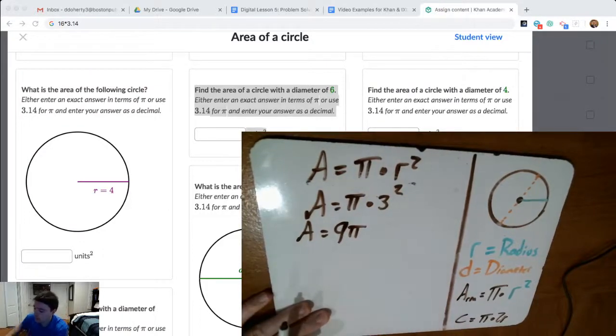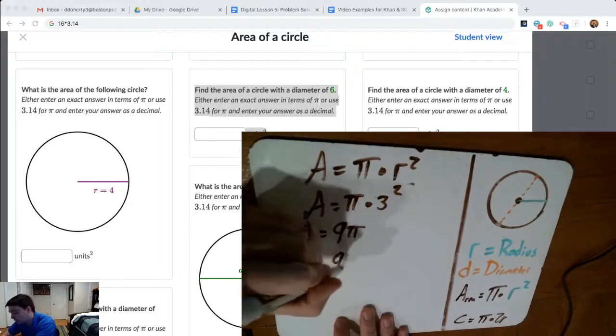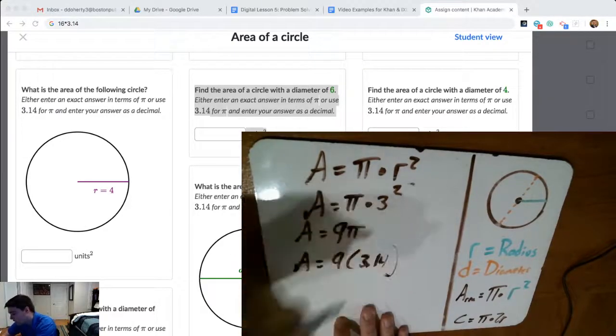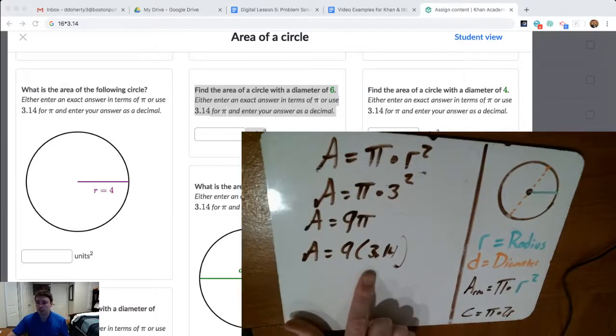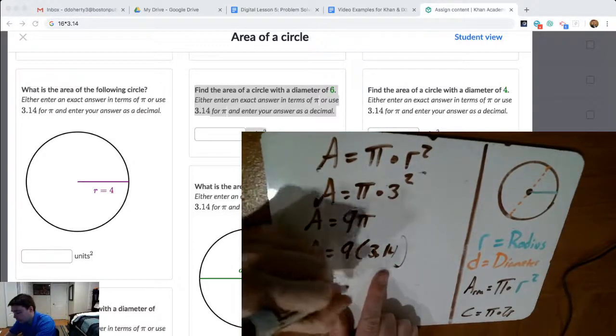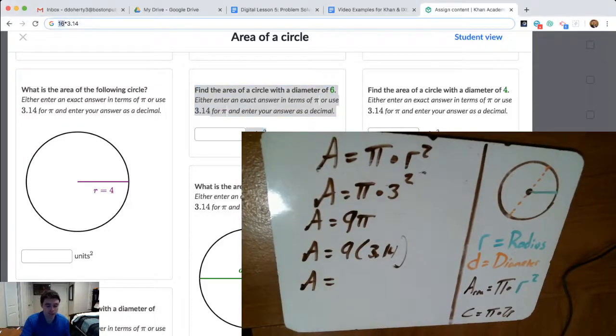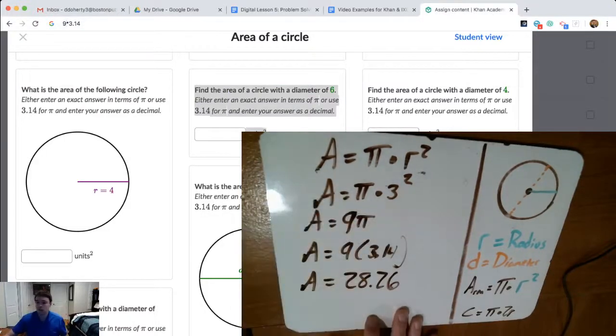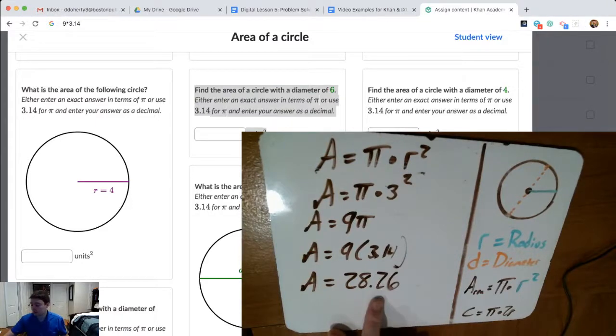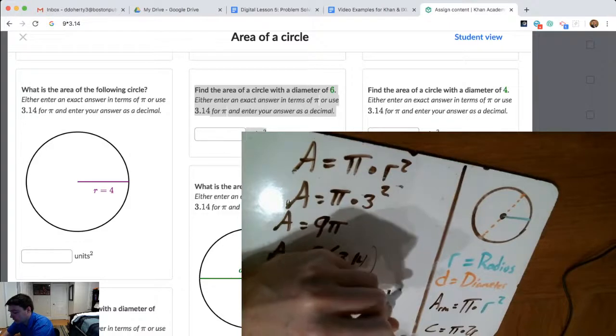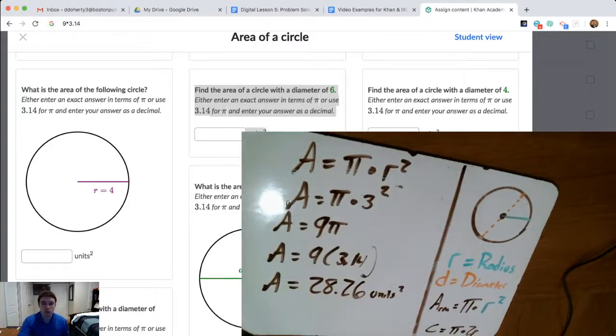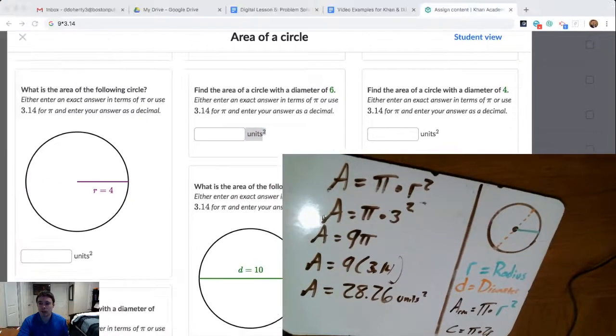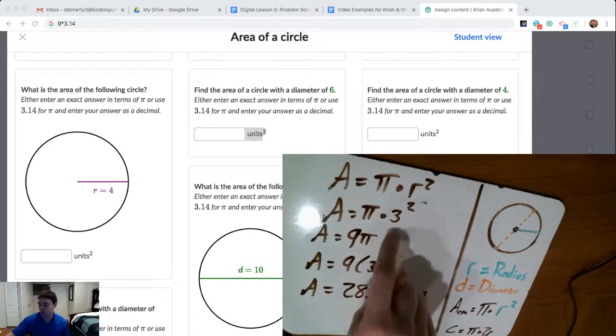I could put 9 pi in as the answer for an exact answer. Or I could use an estimate of 3.14 for pi and work this out to a full decimal answer. 9 times pi or 9 times 3.14. After I plug that into my calculator, 9 times 3.14 gives me 28.26. So the area for the diameter of 6 circle would be 28.26 square units. That's what I'd be plugging in. So if the diameter were 6, that's how we work out an area of 28.26 square units based on a radius of 3.